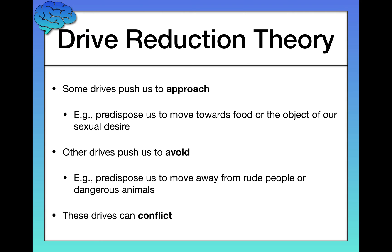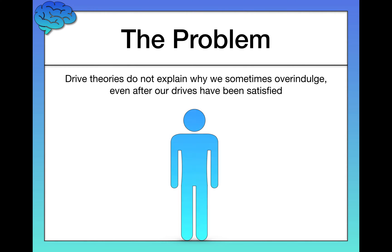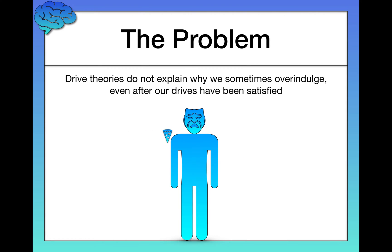Drive reduction theory is a great theory, but it has a problem. It doesn't explain why we sometimes overindulge, even after our drives have been satisfied. If you're at a party serving pizza, you might be full after three or four slices, and yet you eat a couple more slices — even to the point where you feel bad. So it's not just as simple as indulging until our drives are satisfied. Sometimes we go beyond that, continuing to indulge even when we don't have those negative feelings.